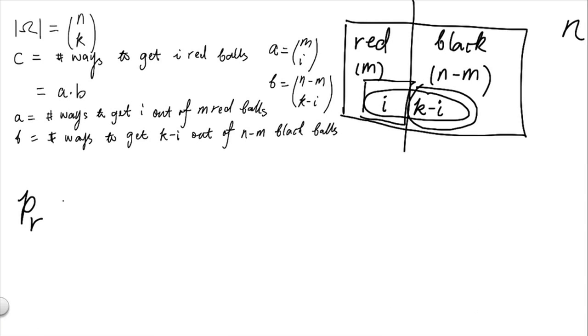Now, putting everything back, we have pr, the probability we set out to compute, is equal to c, the size of the event, and the size divided by the size of the entire sample space.